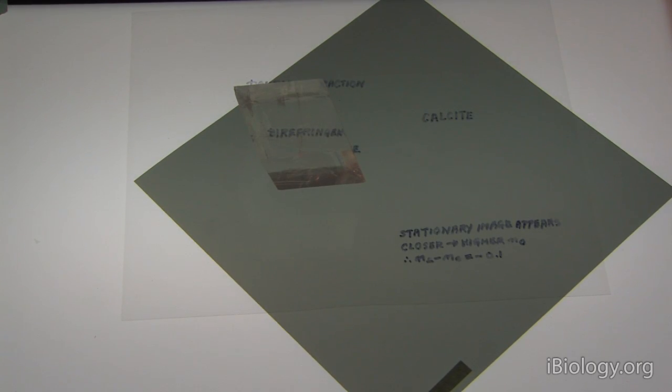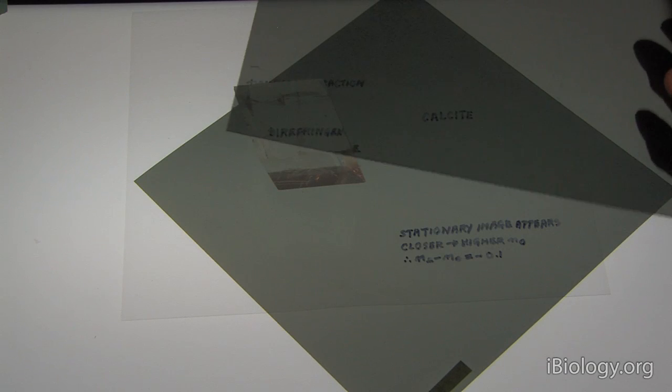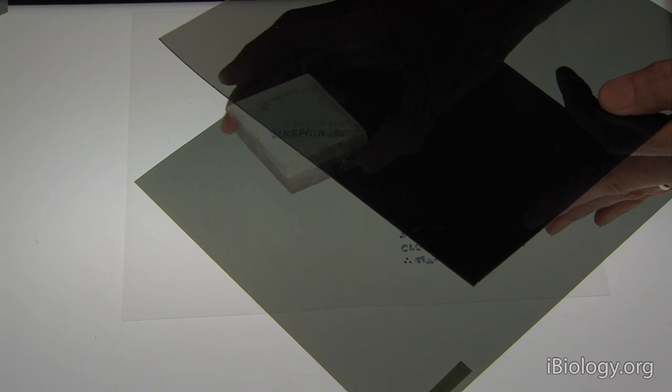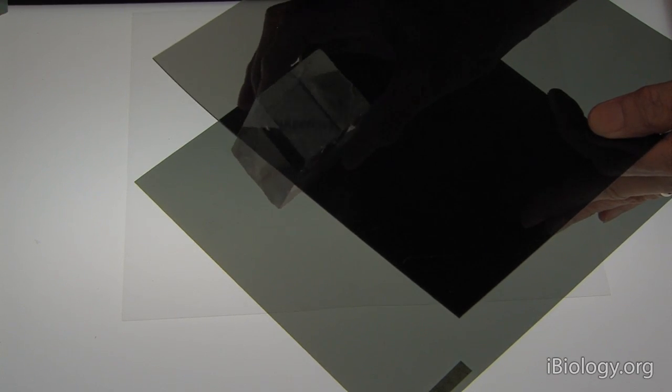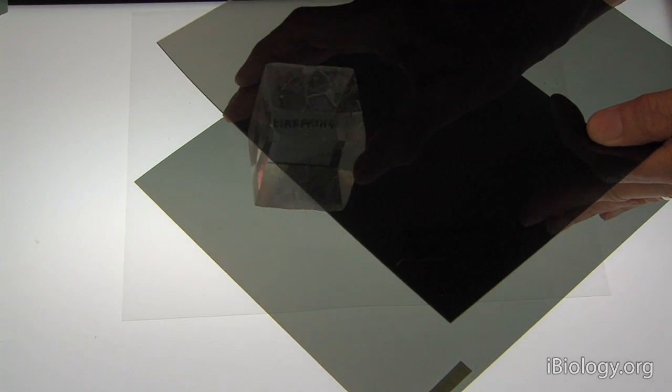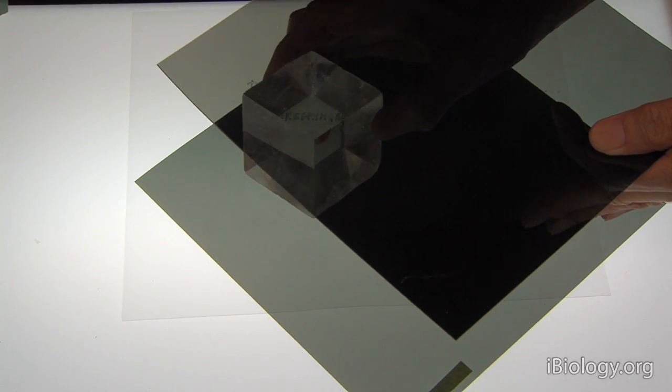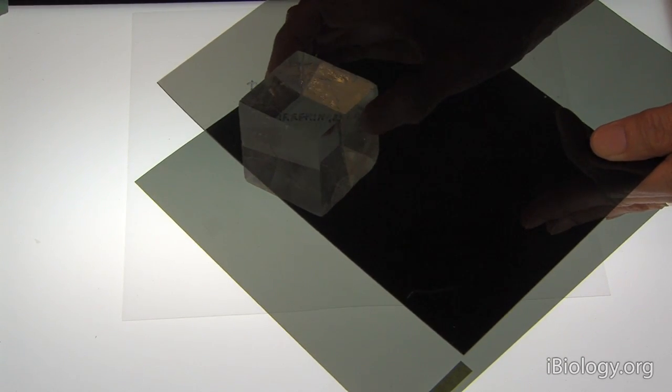Now, when we put a second polarizing material above and cross the two, we still see the birefringent material. As I turn the crystal, the image becomes brighter or darker. This is the property of birefringence.